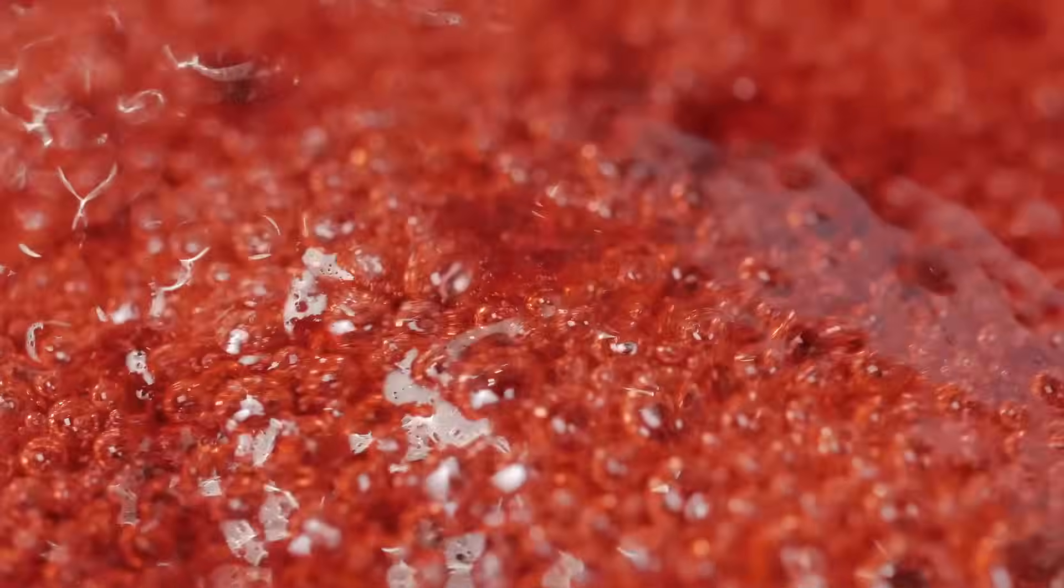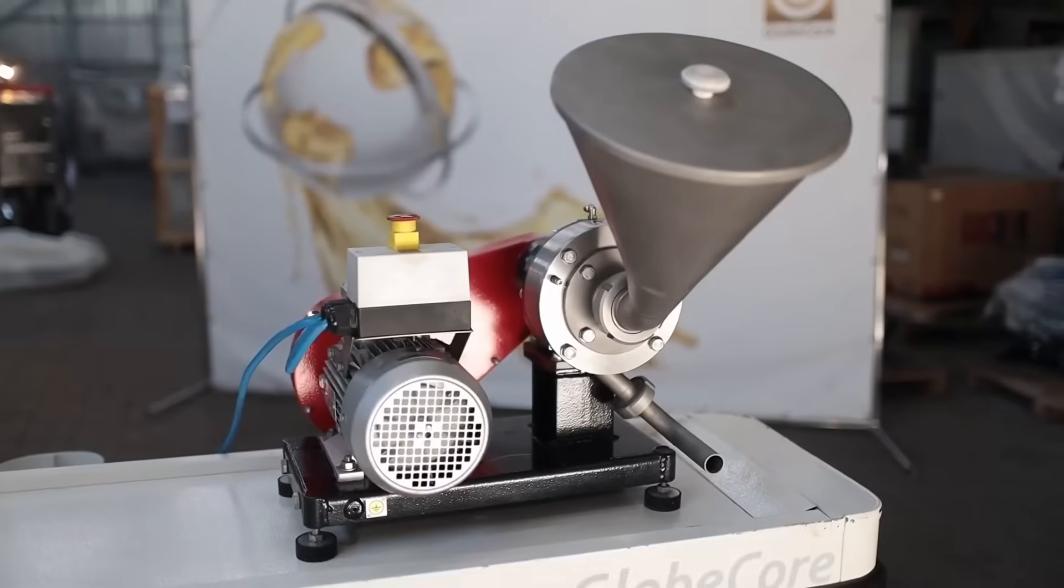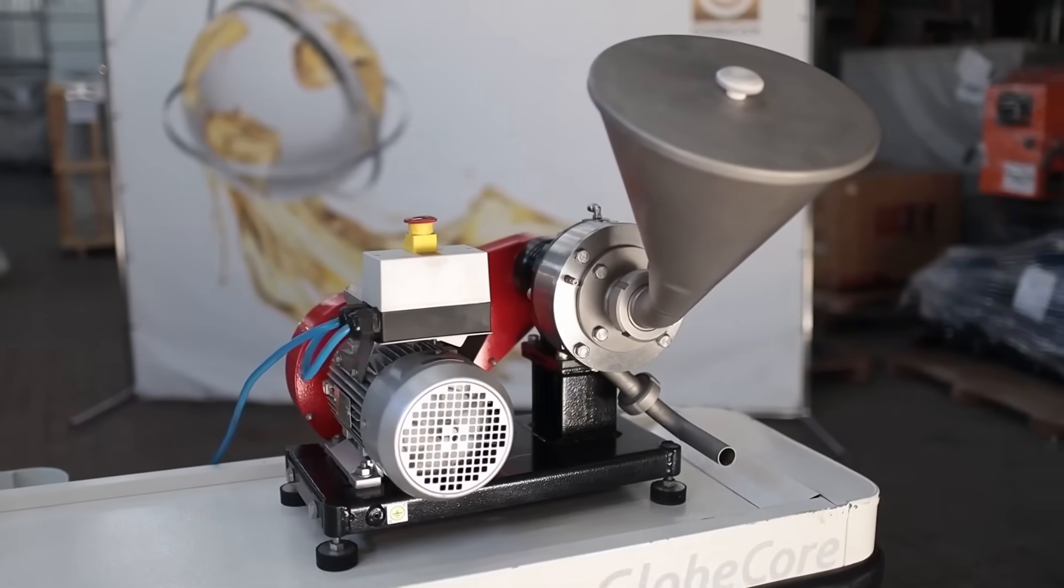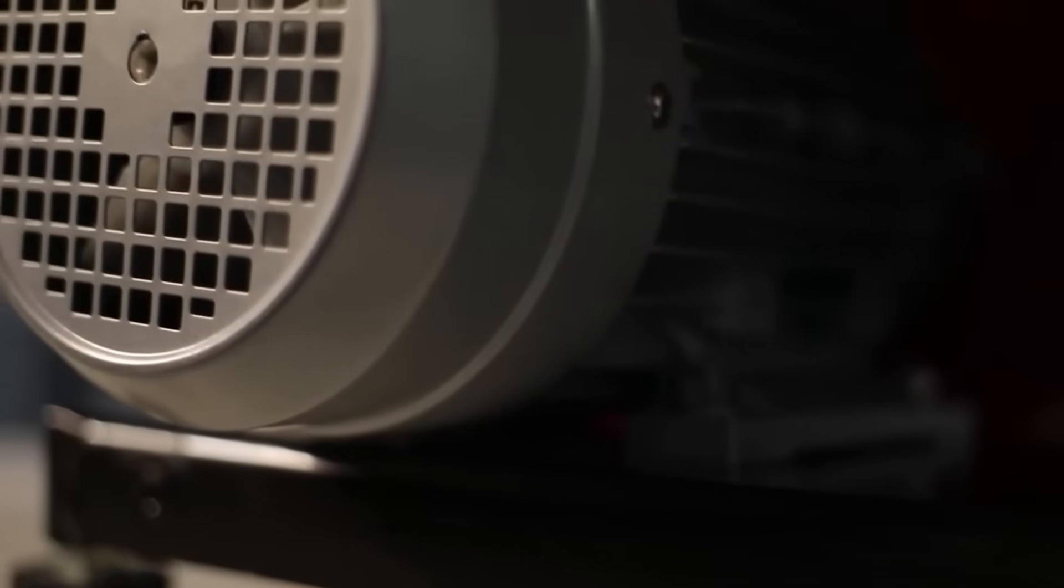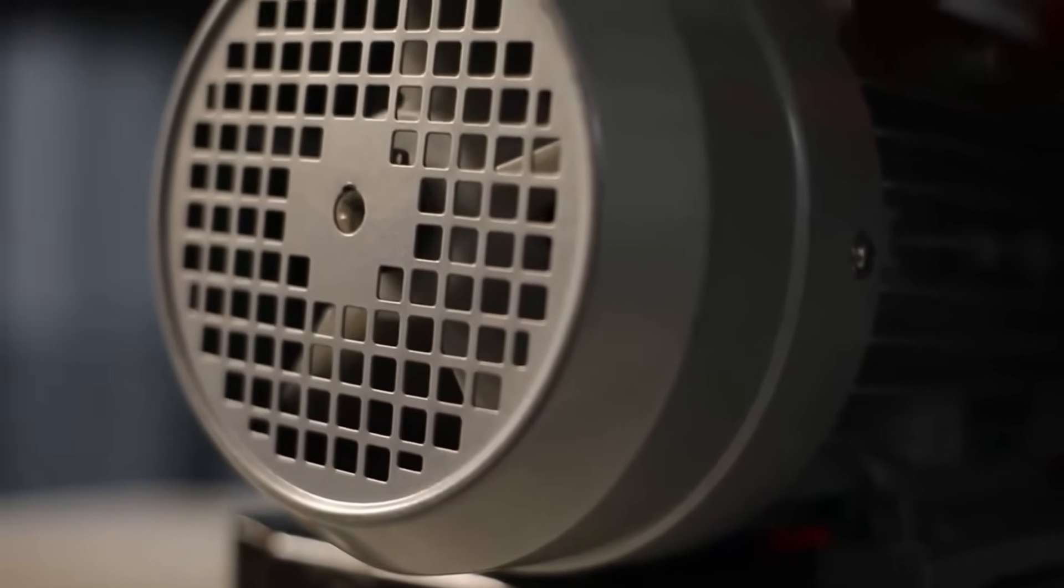In addition, Globe Core colloid mills offer other advantages. These include a heat removal system that prevents the raw material from heating up. This allows preserving the natural colors and aromas of fruit.